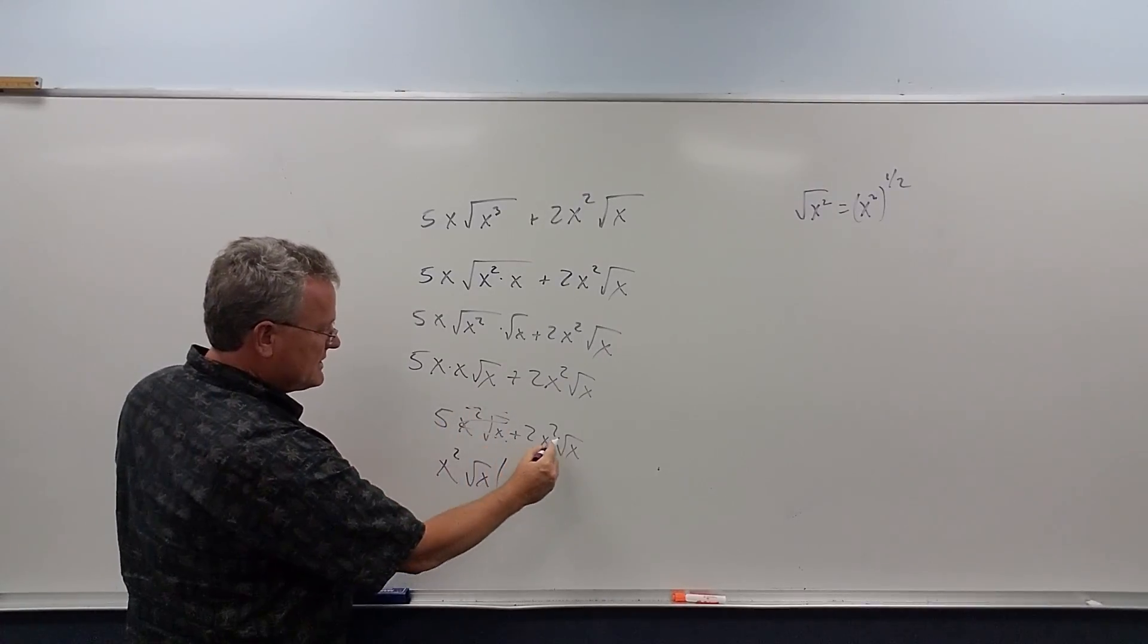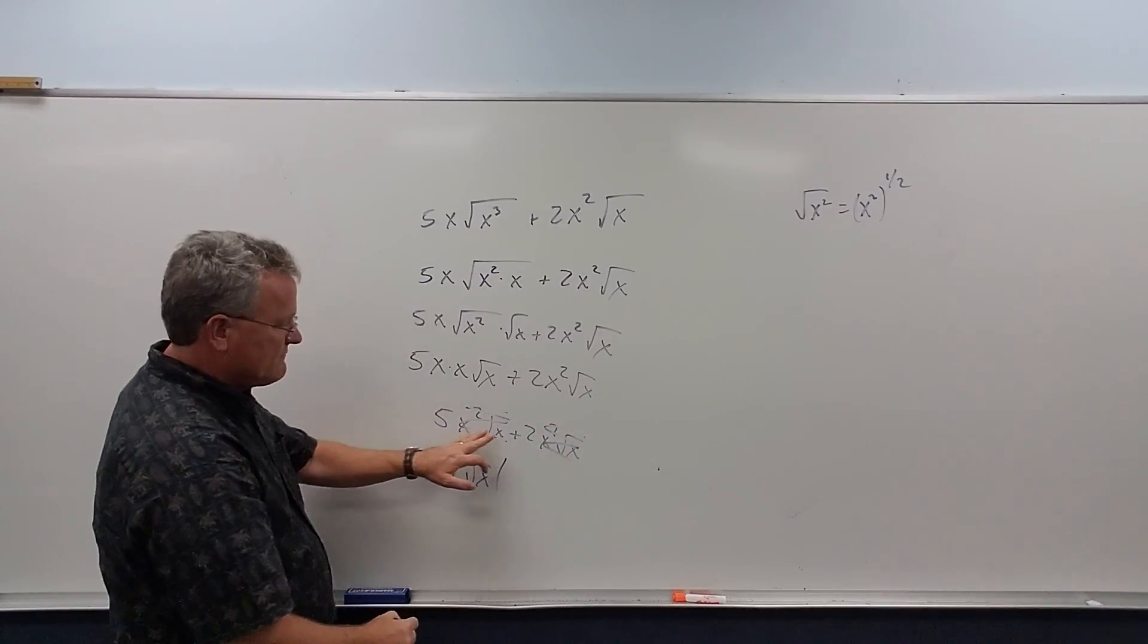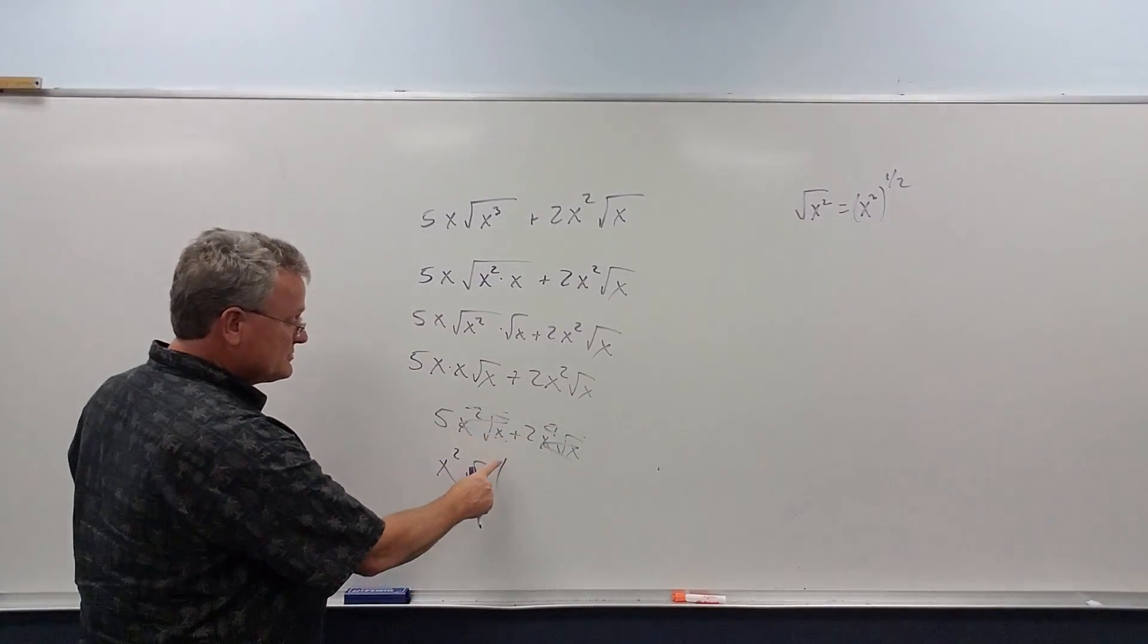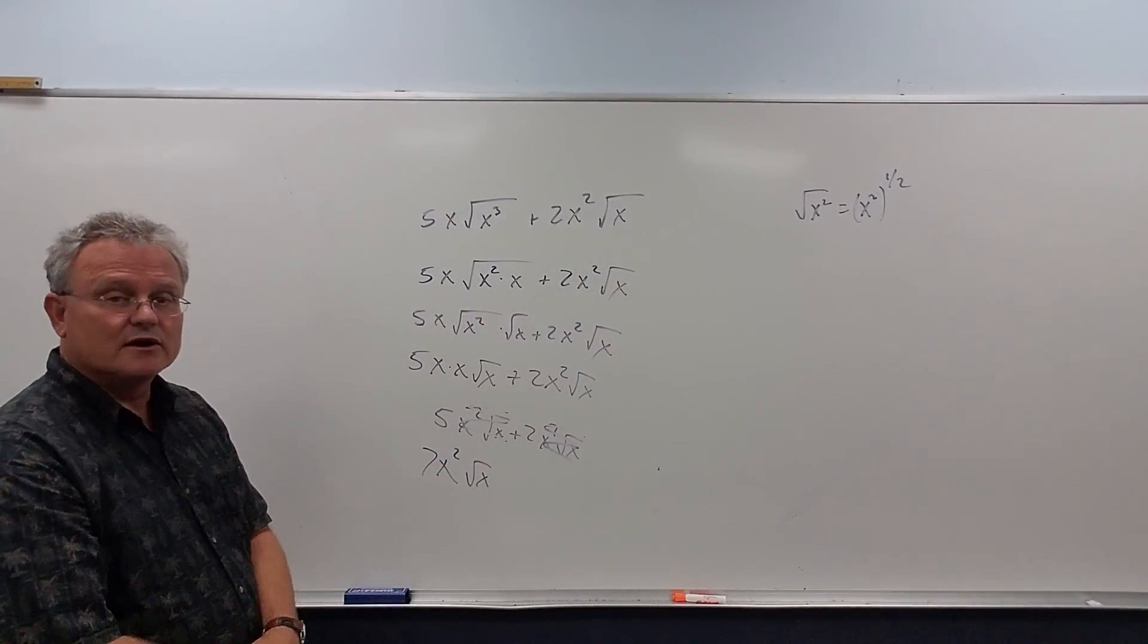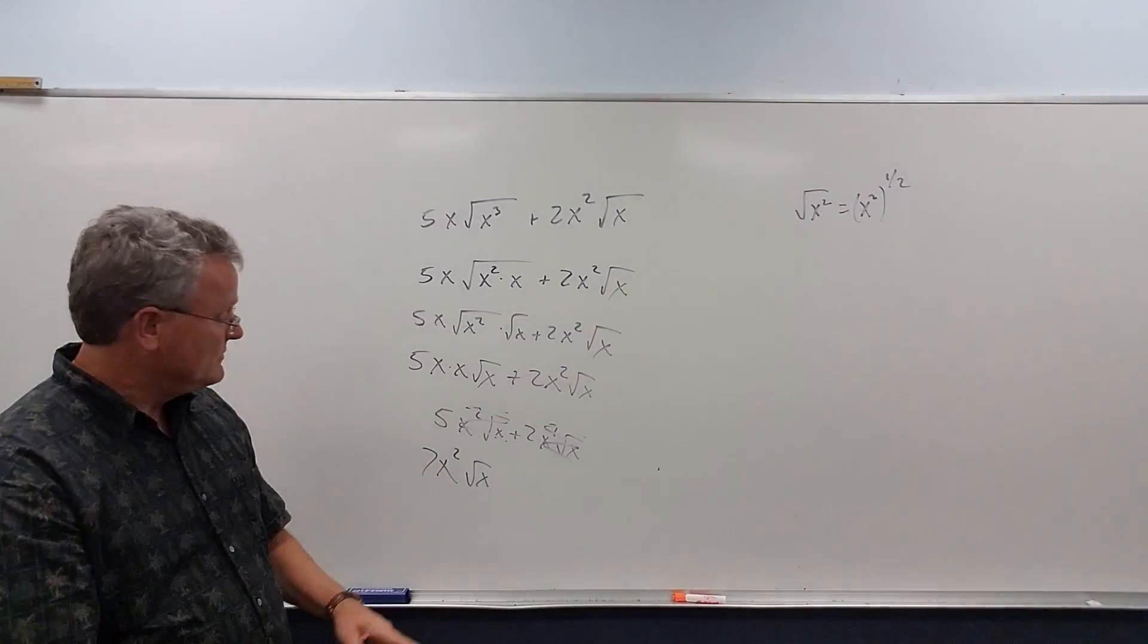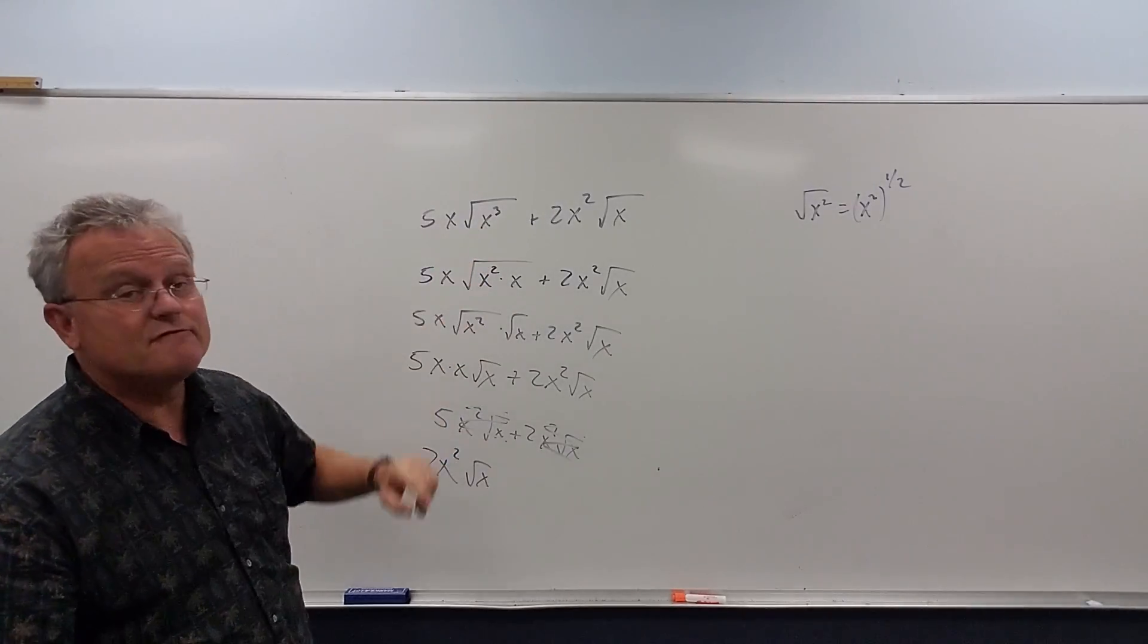and we're left with 5 plus 2, which is 7. So we end up with 7x times the square root of x. So this is a simplified form of that.